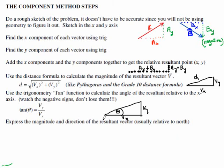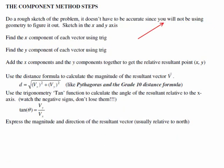So there are the steps for the component method. The basic idea is you take your vector and resolve it into X bits and Y bits - or up bits and right bits, or East and North. You break it into ups and rights or something like that. Some websites call this 'resolving your vector.'